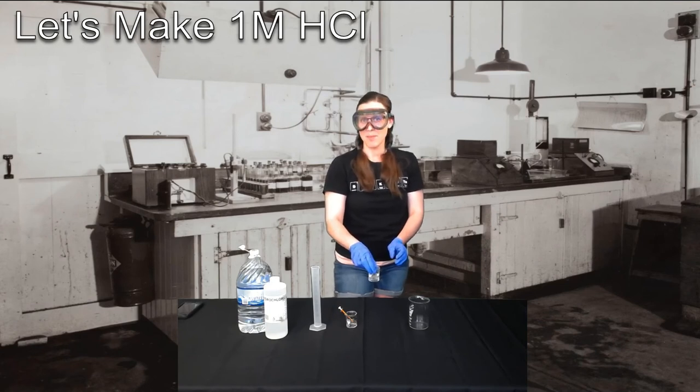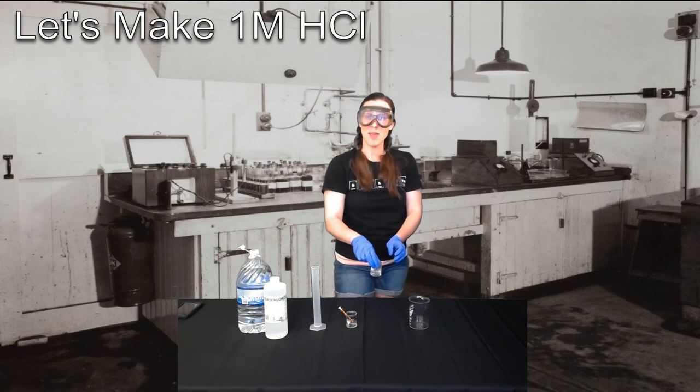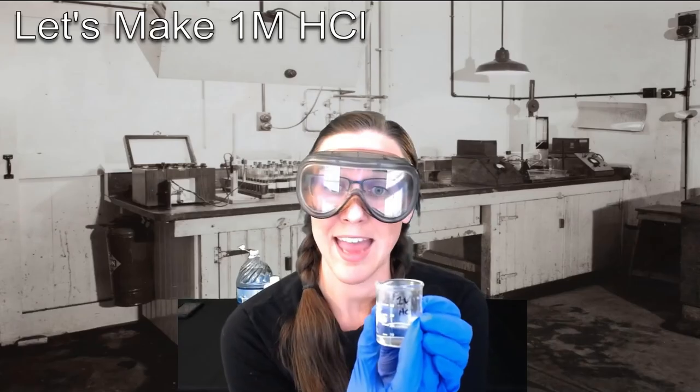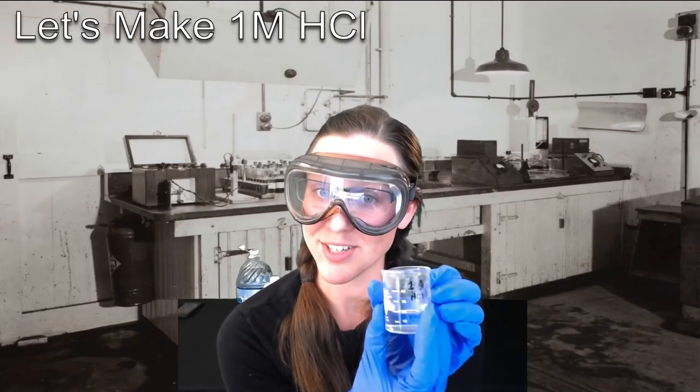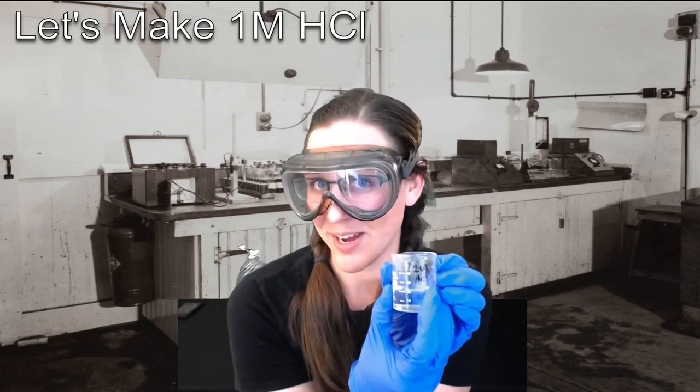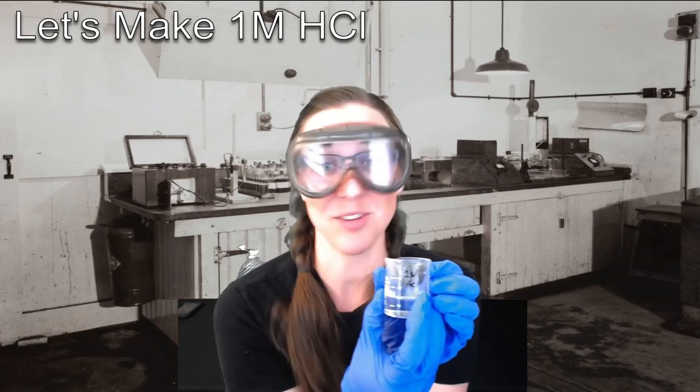Now I'm just going to swirl that up a little bit so I can mix it together. If you are in a lab with a magnetic stir plate and a magnetic stir bar, you may wish to have that stir for a while on the stir plate. And now I have 20 milliliters of 1 molar hydrochloric acid thanks to our dilution equation M1 V1 equals M2 V2.